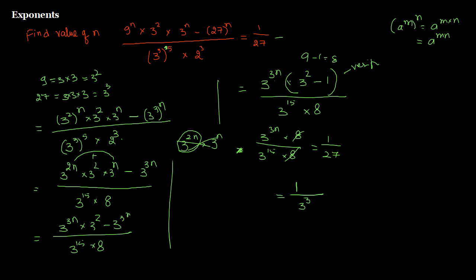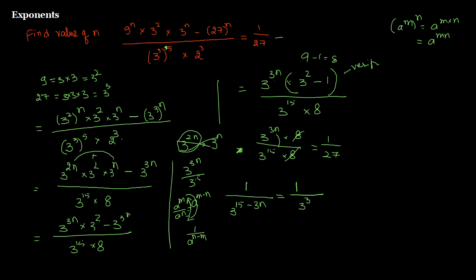Since we have 3 to the power 3n divided by 3 to the power 15, using the law a to the power m divided by a to the power n equals a to the power m minus n — or bringing it to the denominator, 1 divided by a to the power n minus m — we write it as 1 divided by 3 to the power 15 minus 3n. Taking reciprocals on both sides of the equation doesn't change the value.